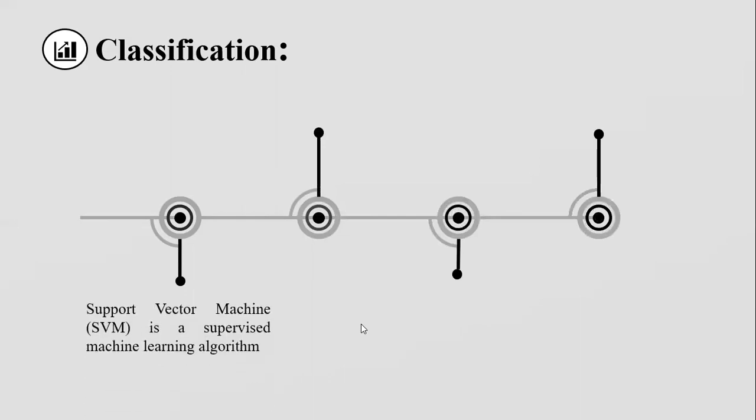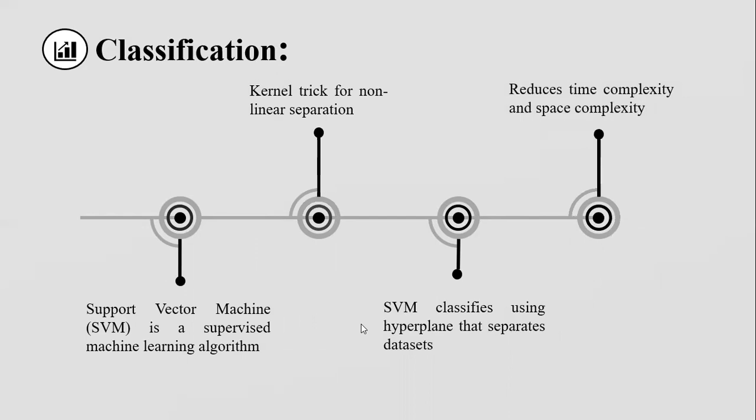Now let's move towards classification. For classification, we use support vector machine, which is a highly discriminative classifier. It is a binary classifier which segregates the data into classes by drawing a hyperplane. It is a robust and less complex machine learning algorithm.